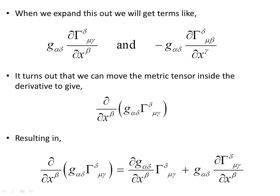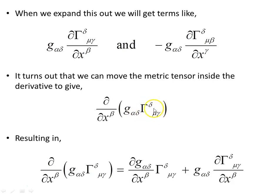When we expand this out, we produce some terms. It turns out that we can move the metric tensor inside the derivative to give the partial derivative of the product of the metric tensor and the affine connection. Applying the Leibniz rule — the product rule — this gives the partial derivative of the metric times the affine connection, plus the metric times the partial derivative of the affine connection.